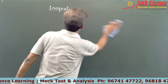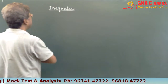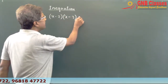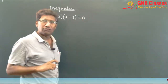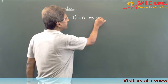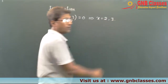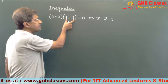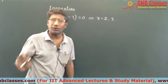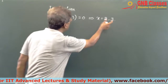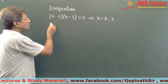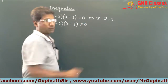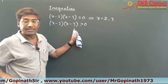Now suppose I give you x minus 2 into x minus 3 equals 0. You would write x is 2 or 3, because setting each factor individually to 0 gives x equals 2 and x equals 3. These are the two values which satisfy the equation. Now suppose I give you x minus 2 into x minus 3 is greater than 0 — it is an inequation. How do we solve this?